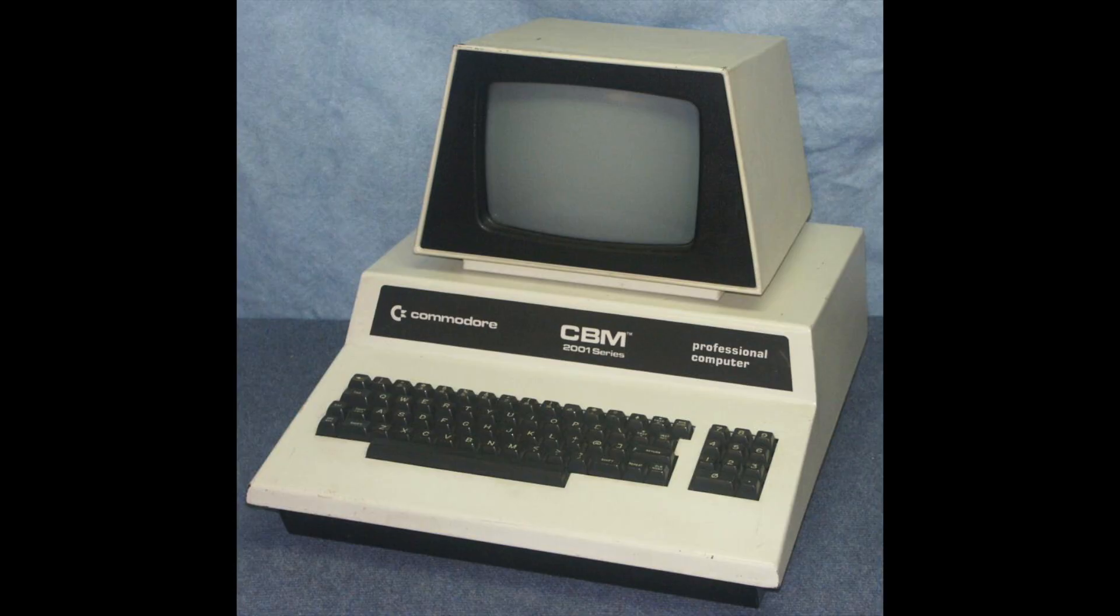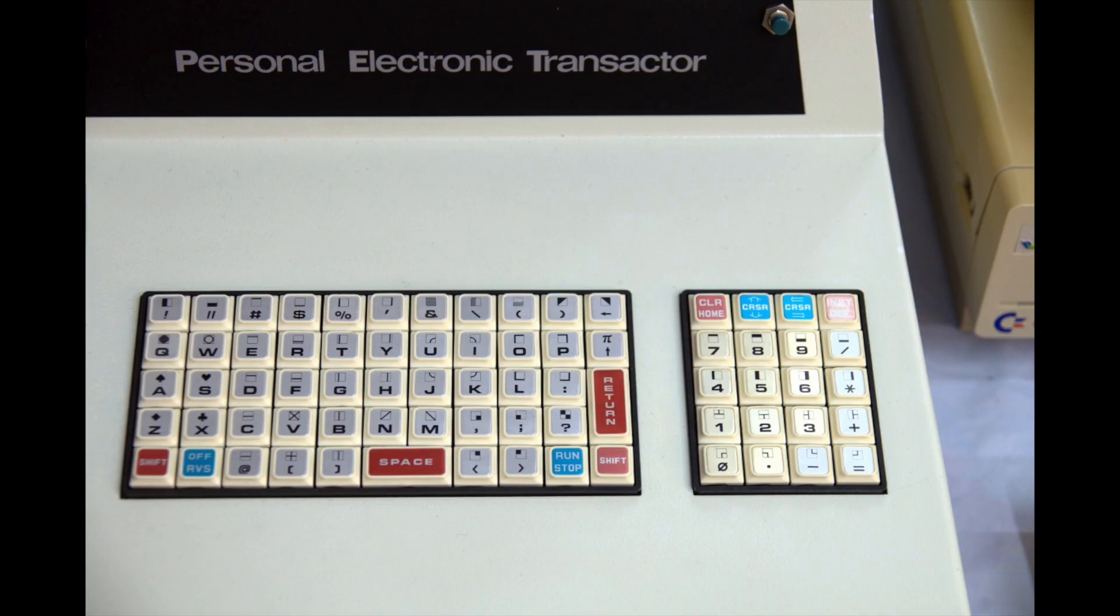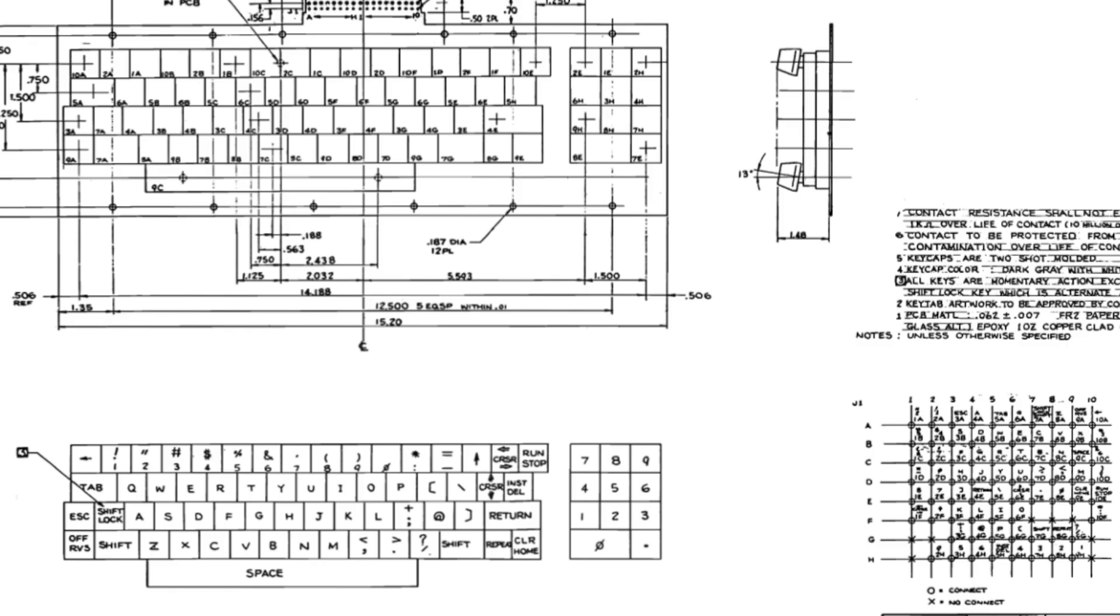The problem is I managed to find a schematic of the PET and a keyboard matrix layout. The trouble is, the PET had several different possible keyboards, including the business keyboard, the home keyboard, and even the cash register style keyboard. This diagram here does not match the keyboard I have on my PET. But the specific keys don't matter that much just yet, so back to how this works.